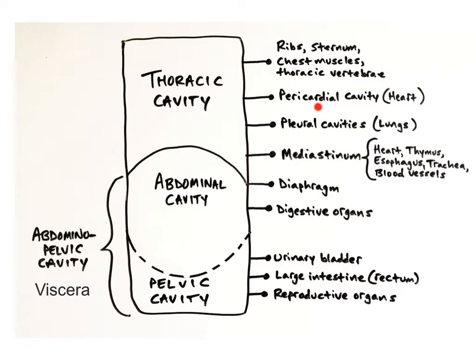The pericardial cavity is the fluid-filled space that surrounds the heart. Each of the two pleural cavities is a fluid-filled space surrounding one lung. You can remember the name pleural because there are two of these cavities. The mediastinum is an anatomical region located in the central or median portion of the thoracic cavity between the lungs. It extends from the sternum to the vertebral column and from the first rib to the diaphragm.